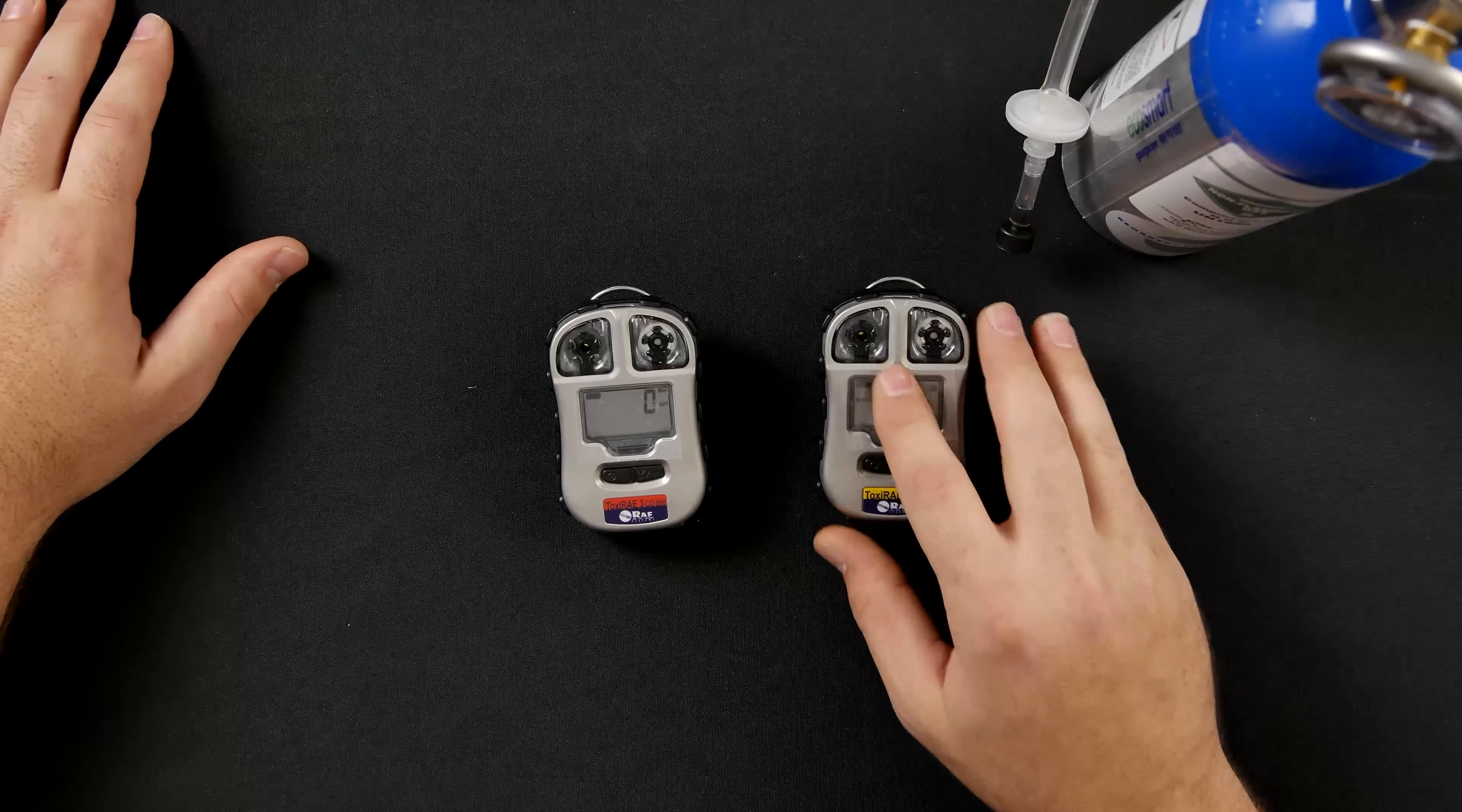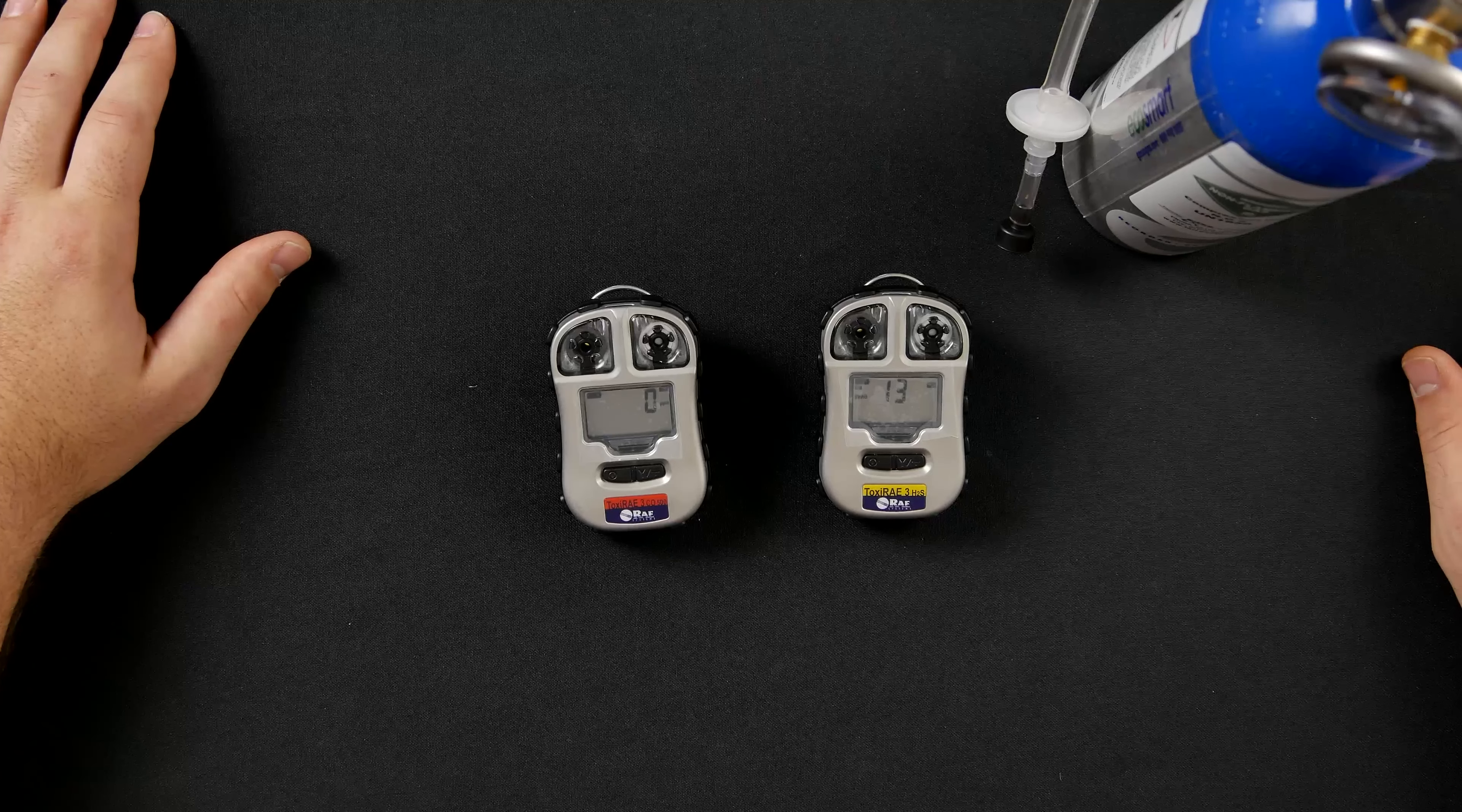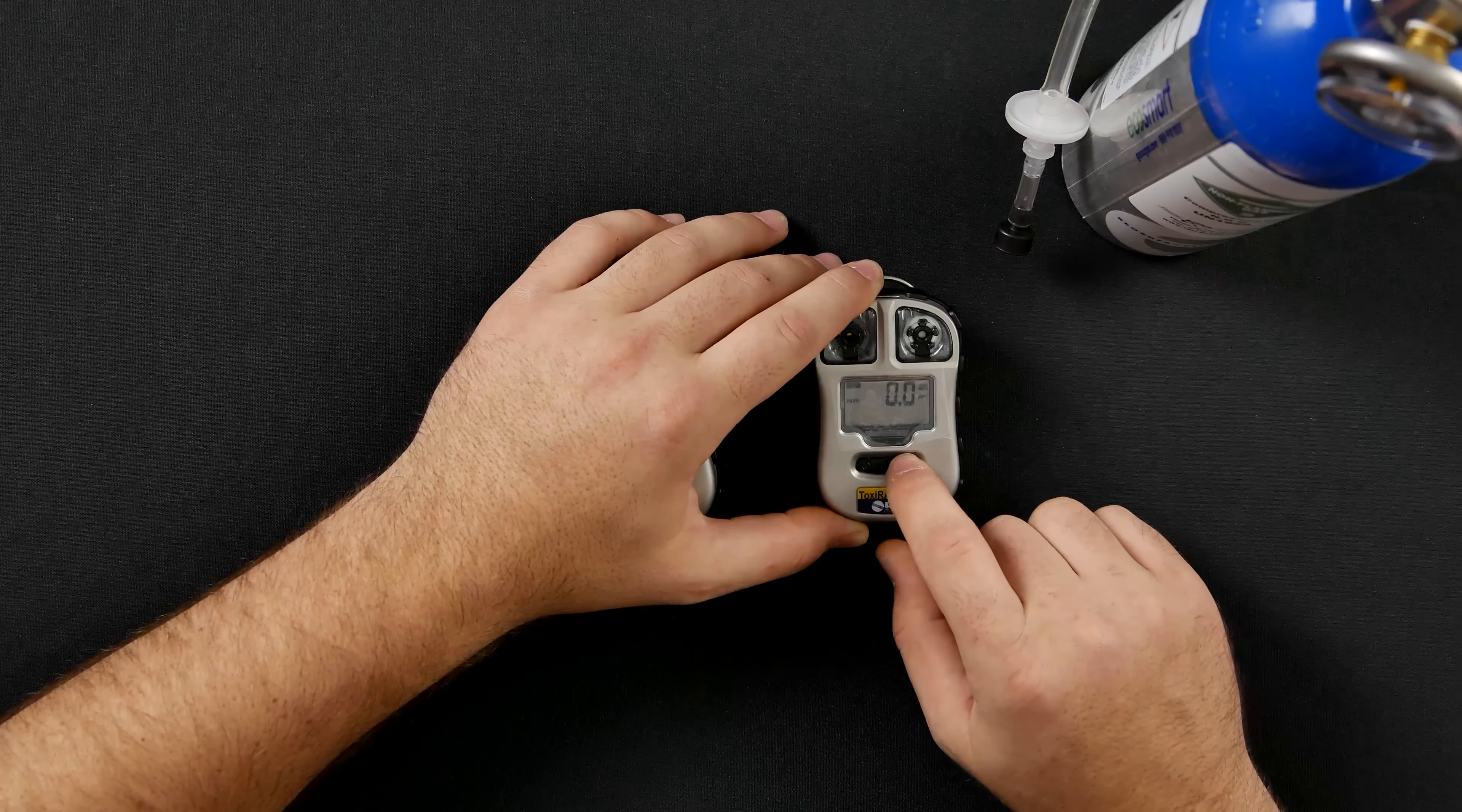It will prompt you to the zero calibration or fresh air calibration. You will then select the Y plus button to start it. After the fresh air or zero calibration, it will show you the reading and that it is finished. Select the Y plus button to continue.